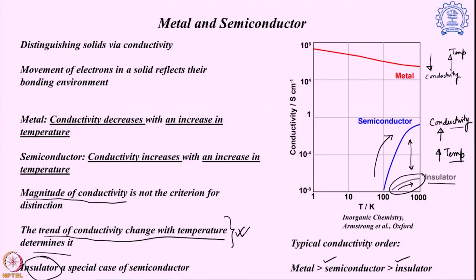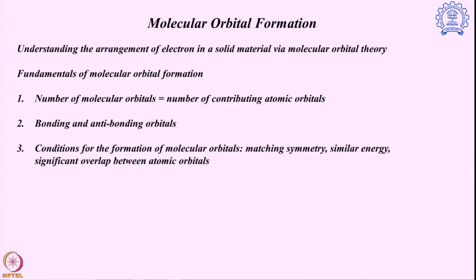Now coming to the next picture: we generally talk about electronic arrangement through molecular orbital theory. This molecular orbital theory has been discussed in detail in the previous section where we discussed the structure of small molecules, and it can be extended even for the solid form. Before going into the details of the solid, let us have a quick look back at the fundamentals of molecular orbital formation.